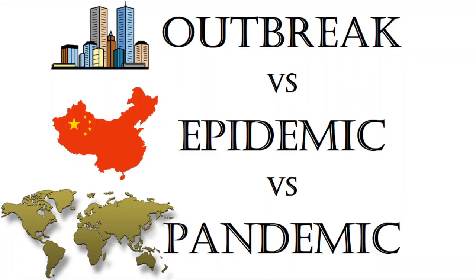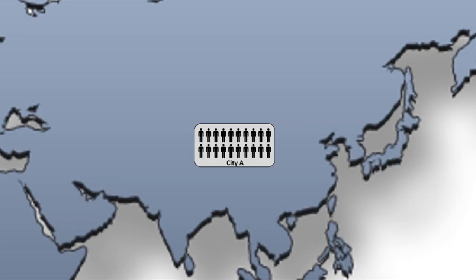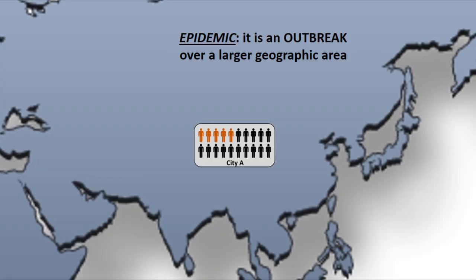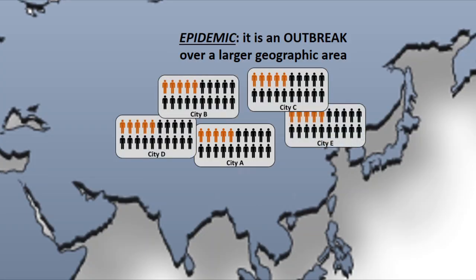What is the difference between outbreak, epidemic, and pandemic? Consider a city of 20 people where two out of 20 are usually infected with a particular disease. If there is an unusual spike in the number of affected people, say from two to three to four to five, then such a sudden increase in cases of a disease in a particular place is called an outbreak. If this outbreak spreads to other places in that country, then it is called an epidemic.